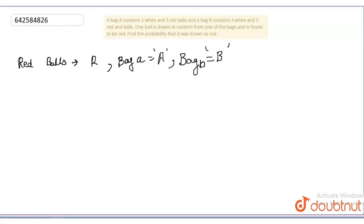Now, let's write the condition of bag A. This is according to the question. Bag A is containing 2 white balls and 3 red balls.